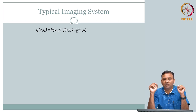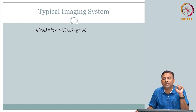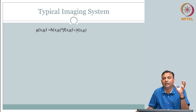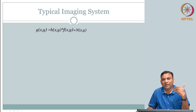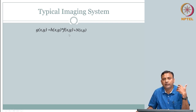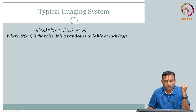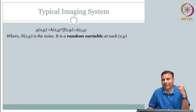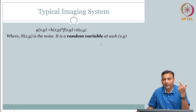The idea is: if it is random, does that mean we cannot do anything about it and will have to live with it? Or, if it is random, maybe we can understand certain parameters about this randomness, capture this randomness, and then use it to our advantage. The beauty of randomness is that, although you cannot say with 100 percent certainty what the value is going to be, there are well-defined theories about quantifying randomness — and based on probabilities, you can still use that knowledge to reduce the noise. So n(x,y) is the noise — it is a random variable.